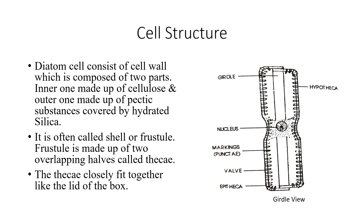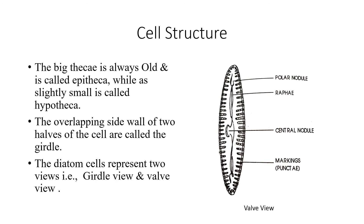The diatom cell is made up of two cell walls — the inner one of cellulose, the outer one of pectic substances, which is also impregnated with hydrated silica. The cell is called the frustule. The frustule in turn is made up of two halves called the theca. They fit closely together like the lid of a box. The bigger theca is always older and is called the epitheca, while the slightly smaller one is called the hypotheca.